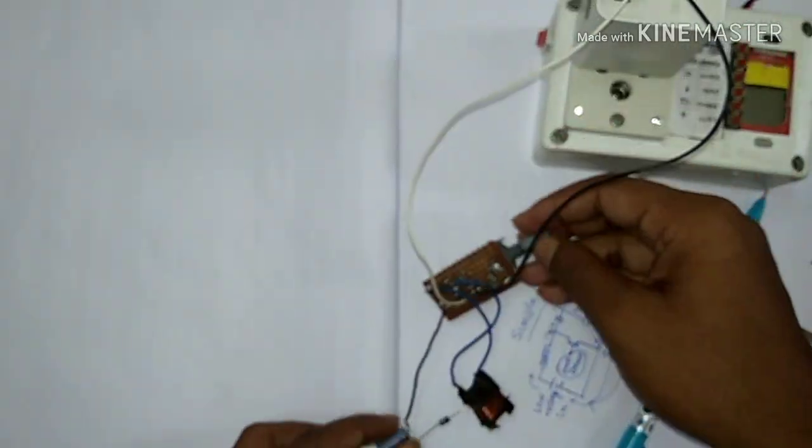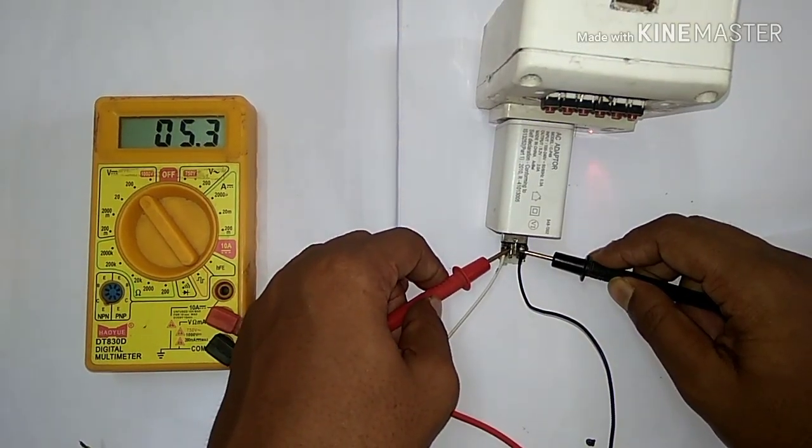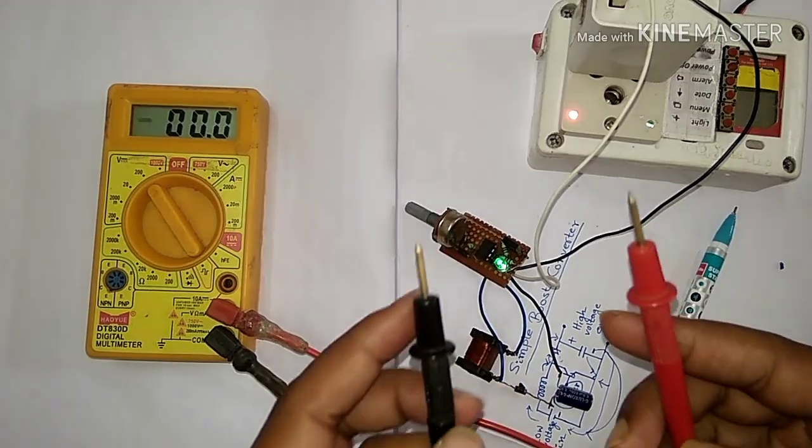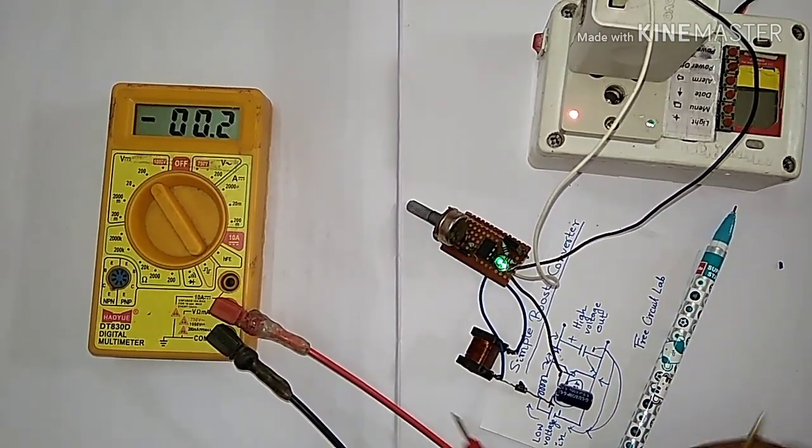My circuit is totally complete and we move forward to the testing part. I am using a 5V mobile charger as input and checking the output voltage with my multimeter. And wow, it's working on first test.